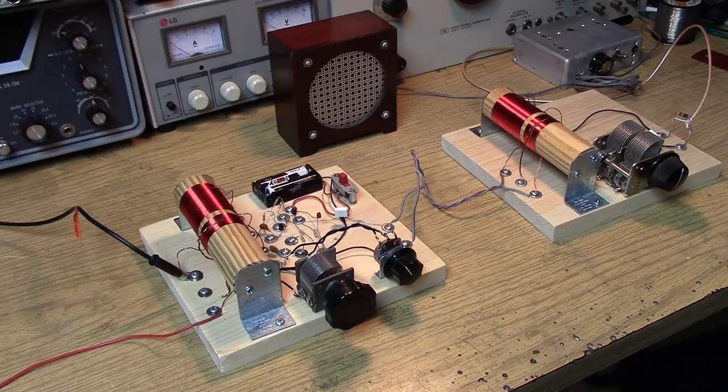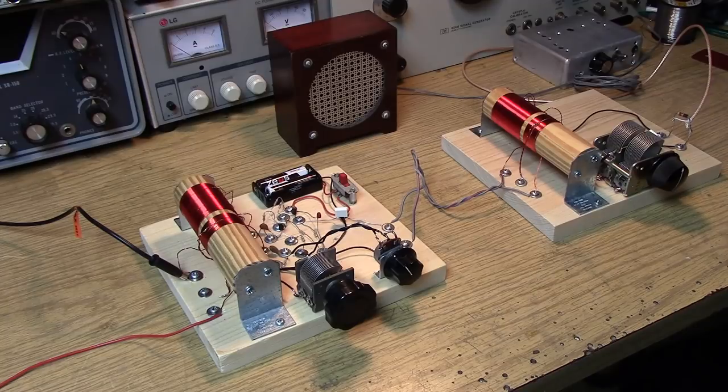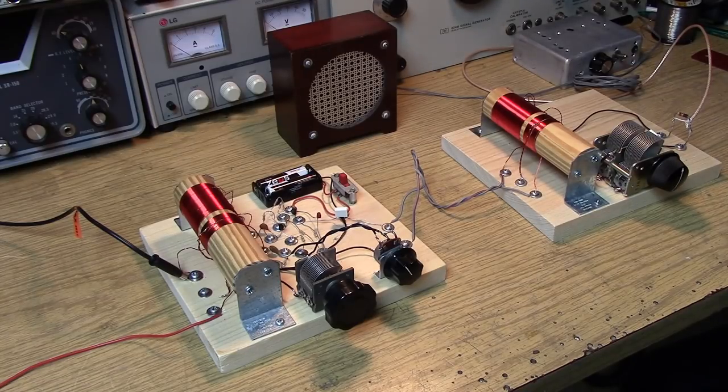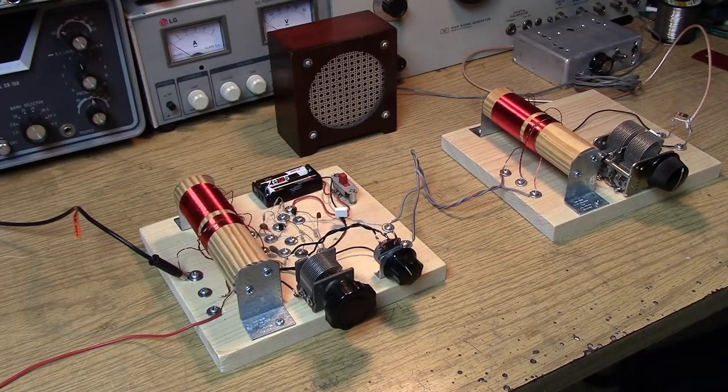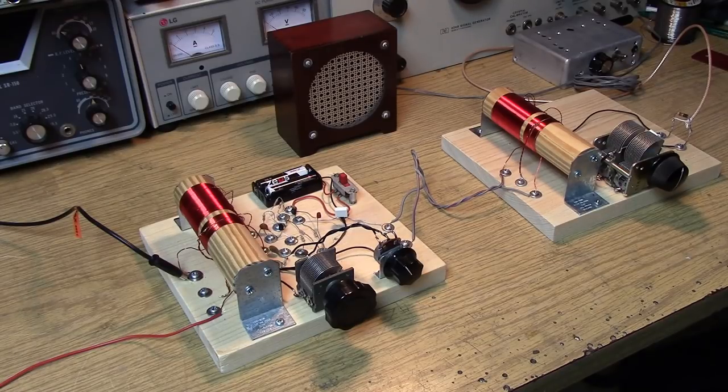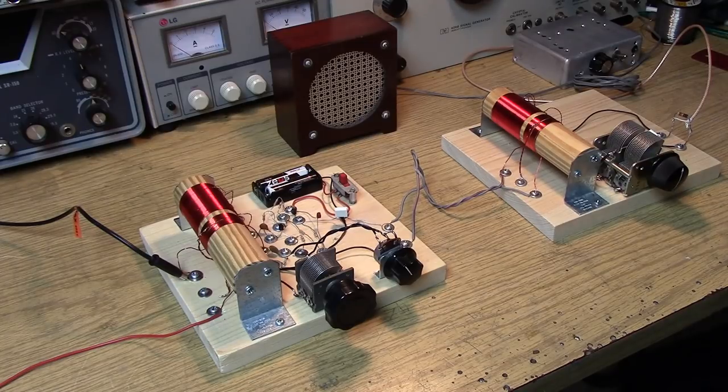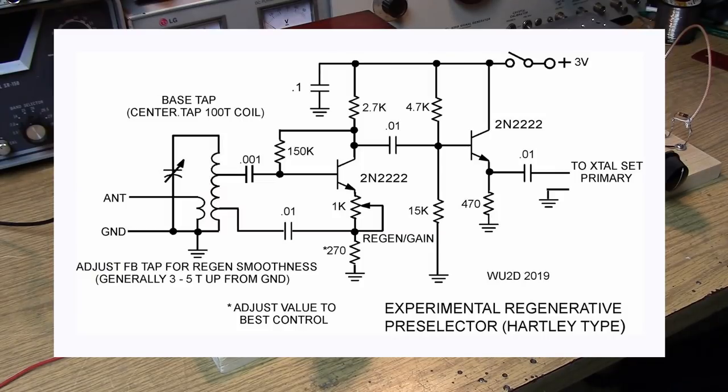So what we have here is the experimental regenerative preselector. A regenerative preselector is basically like a regenerative receiver except instead of detecting we use it as an amplifier and we take the output off the collector side of the transistor that is regenerating. In this case, we're running it into an emitter follower. As you can see, the circuit's quite a bit more complex than our simple single transistor circuit.